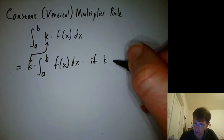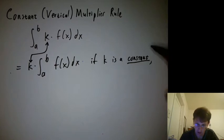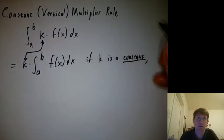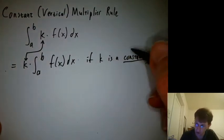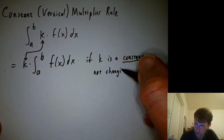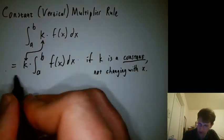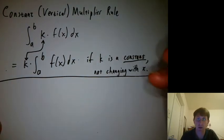If k is a constant, not changing with x or with t, if that's the variable that we're integrating. That's the constant vertical multiplier rule.